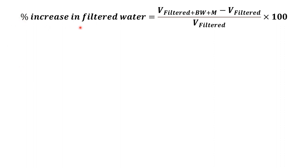The percentage increase in filtered water is calculated based on the volume of filtered water as the denominator. The increase in water is due to the backwashed water plus maturation water being put back into the tank. So the total water obtained after filtration becomes filtered water plus backwashed water plus maturation water. Without recovery, the volume would just be the filtered water itself.